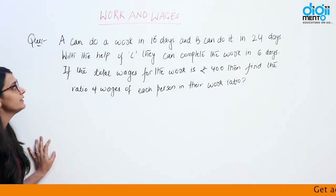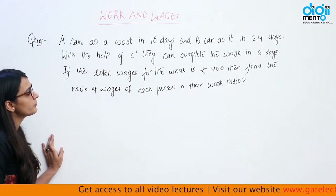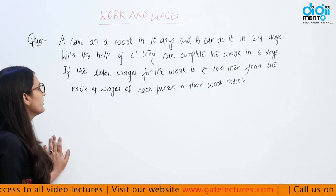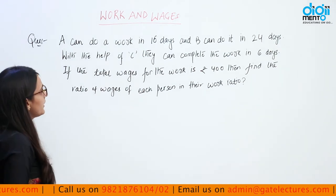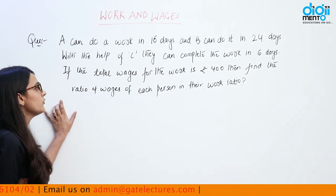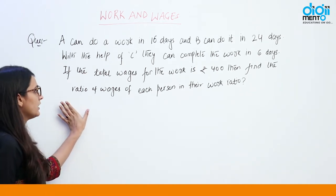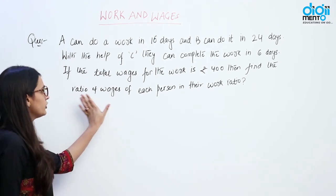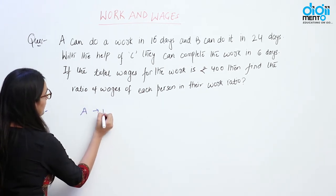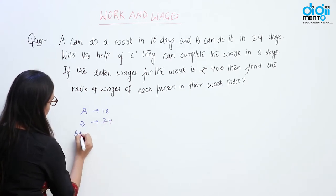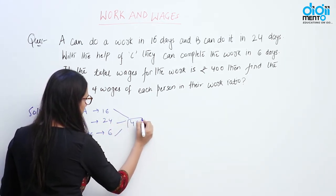The next question: A can do a work in 16 days and B can do it in 24 days. With the help of C, they can complete the work in 6 days. If the total wages for the work is Rs. 400, find the wages ratio of each person. A completes in 16 days, B in 24 days, and together A, B, C complete it in 6 days with total wages Rs. 400. First, find total work: LCM = 48 units.